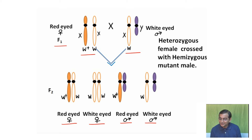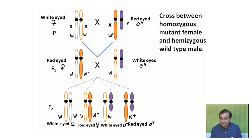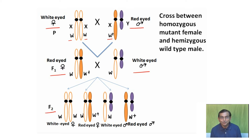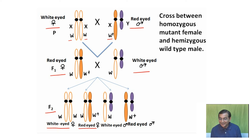He also carried out another cross, intercrossing a white-eyed female with a red-eyed male. The white-eyed female had genotype X^W X^W and the red-eyed male had genotype X^W+ Y (Y carries no eye-color gene). In the F1 generation he obtained red-eyed females and white-eyed males. In the F2 generation, alleles segregated, giving half white-eyed and half red-eyed in each sex.